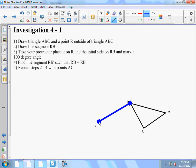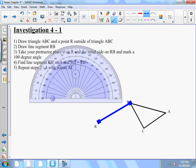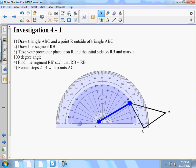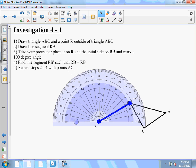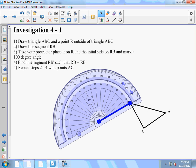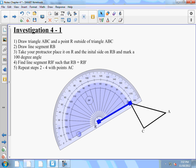Step three, take a protractor, place it on R with the initial side on RB, and mark a 100-degree angle. I'm going to take my protractor out and center it on R, and then have my initial side point towards zero so it matches up with RB. Then mark 100 degrees. In this case, I'm going to pass that first 100 that I see on the protractor.